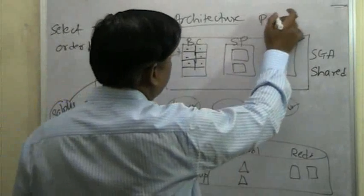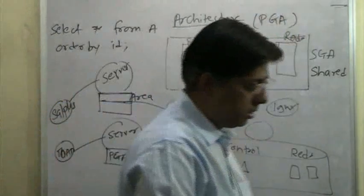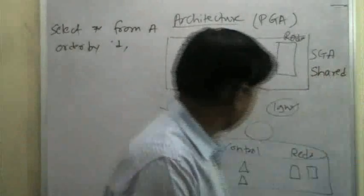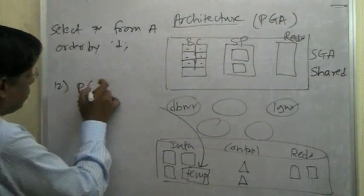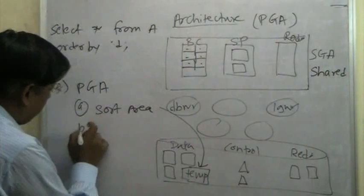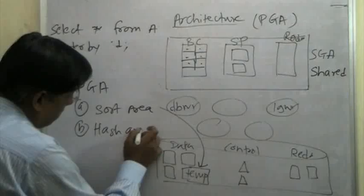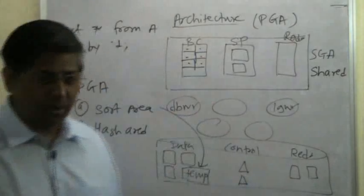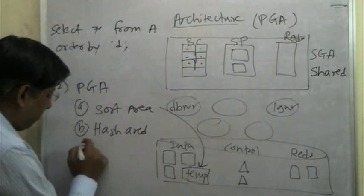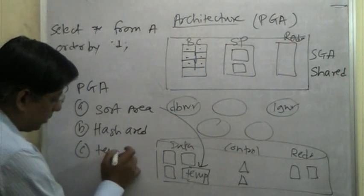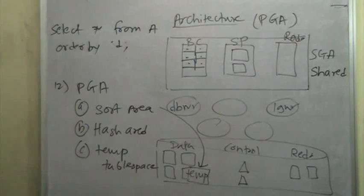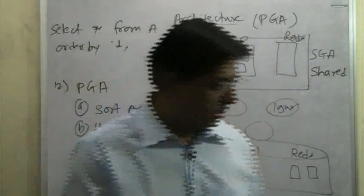So, that was the point of the discussion about the PGA. Sort area is, the terminologies that we need to remember here is PGA, program global area, and within the program global area, we have what is called as a sort area, used for sorting. And we also have a hash area, used for hash join algorithms. We will not go into the details of what hash join is and all that stuff. But these are the areas, and then, if that is not enough, you go to the temp table space. We have seen this thing, temp table space. So, this is the description about the PGA, and then we will see about the data.